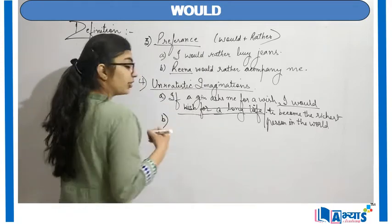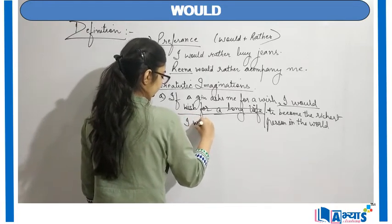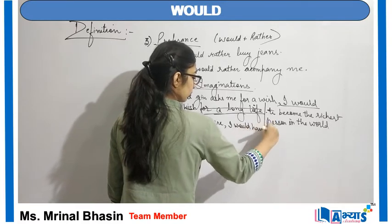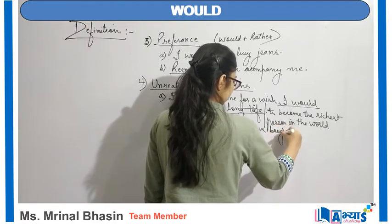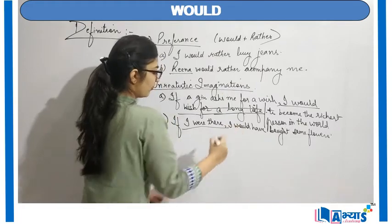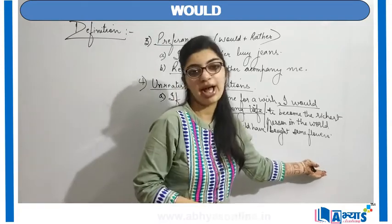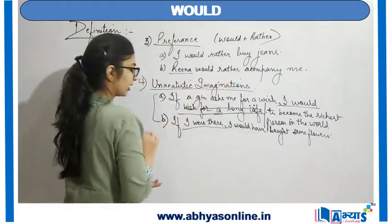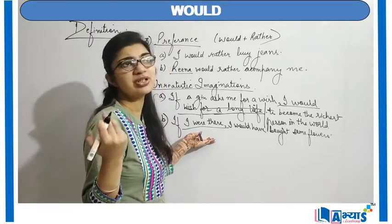Another example: 'If I were there, I would have bought some flowers.' Again, 'if I were there' means I am not actually there. Because I was not there, this thing would not have happened. So again, something unrealistic — it did not happen. These are sentences where 'would' is used for some kind of imagination. If I say 'if I were there,' I am just imagining; I am not actually over there.